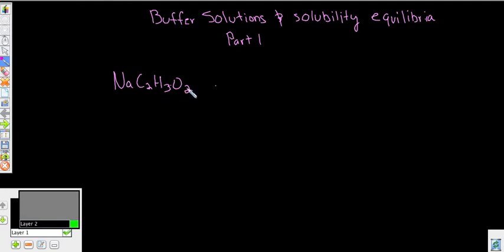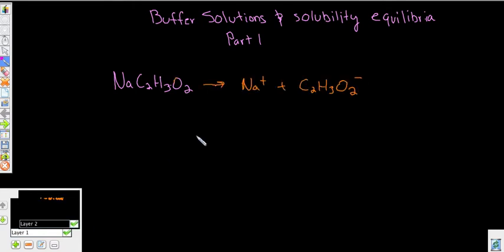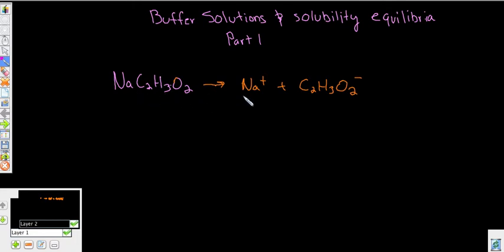Let's look at this right here. This is sodium acetate, which is going to be a weak base. It's going to dissociate into sodium ions, which are neutral, and acetate ions, which is a weak base because it's going to be able to pull hydrogens to itself. If this ion is added to a weak acid that shares the same conjugate ion, you create a buffer situation — also called the common ion effect.